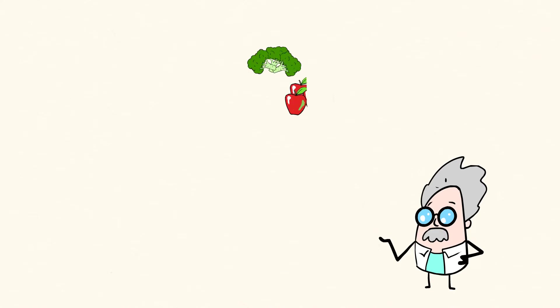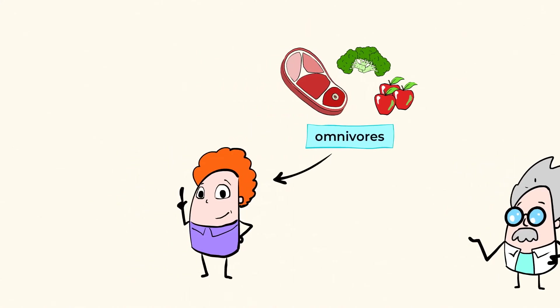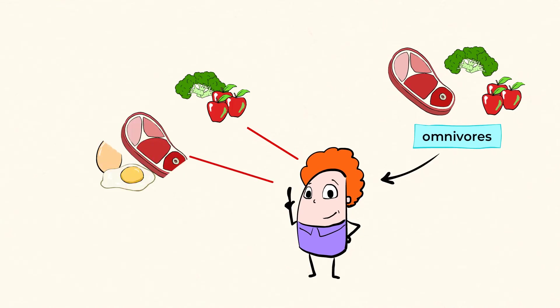There are also animals who eat both plants and meat. Such animals are called omnivores. Most people are omnivores because they eat fruits and vegetables as well as meat and eggs. If you're having chicken and potatoes for dinner, you're an omnivore too.